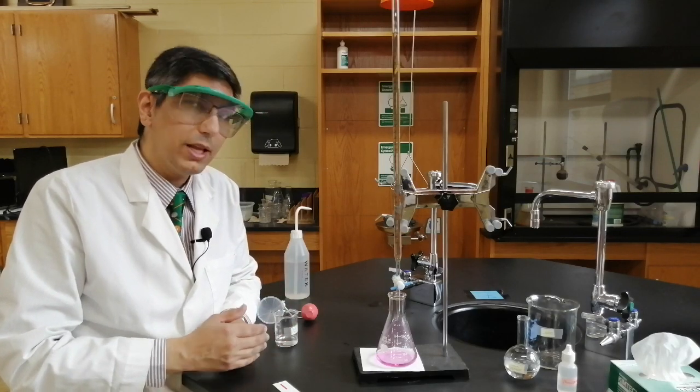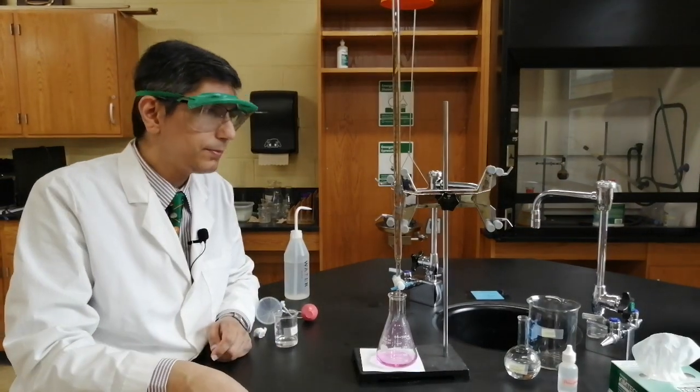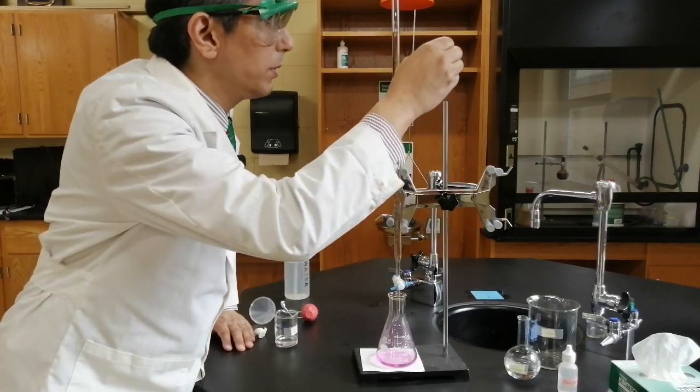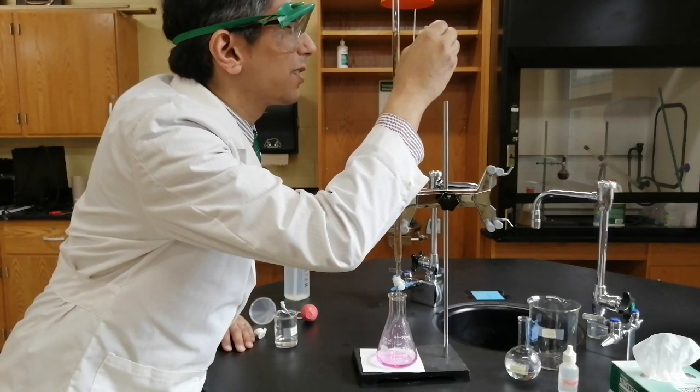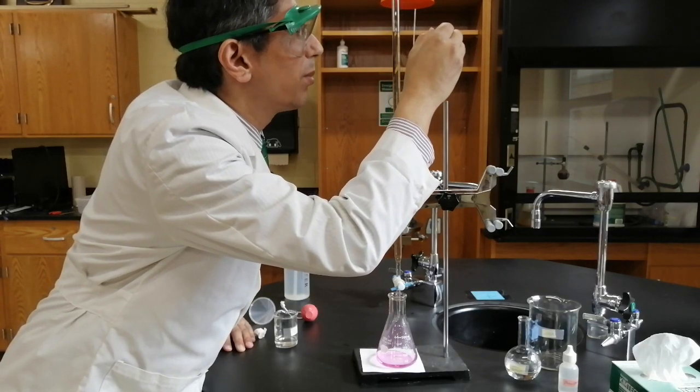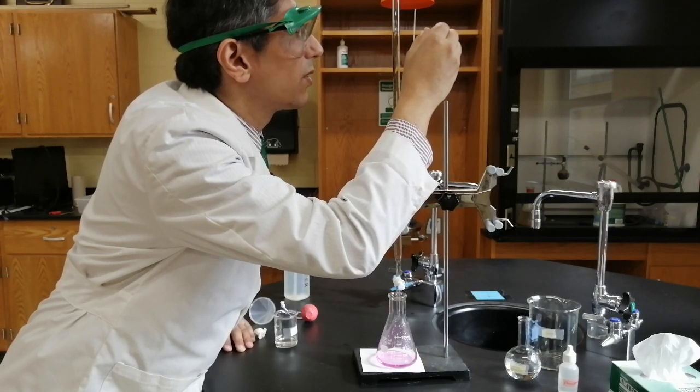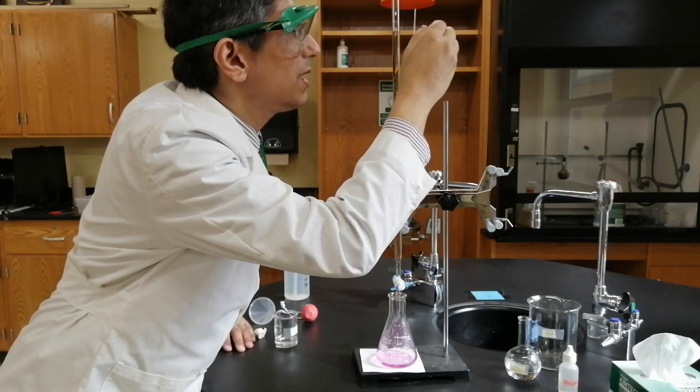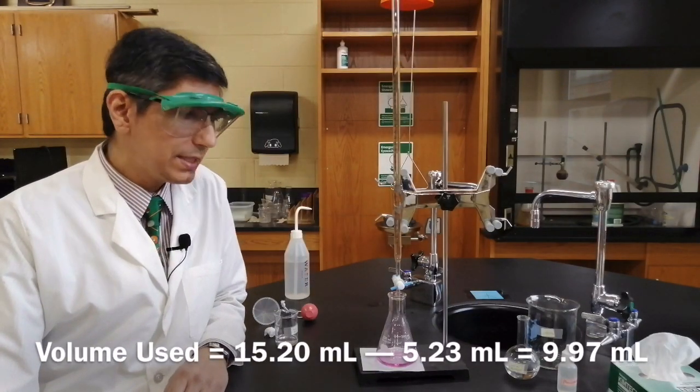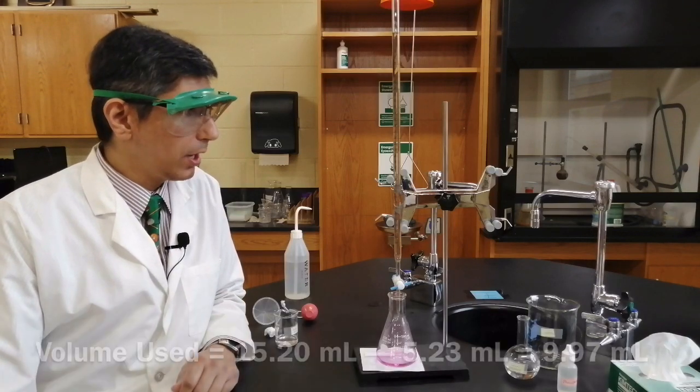So once again, you want to take a final reading. So our initial reading was 5.23. So this is where we can take another reading. And this time it looks like we are right around 15.20. So that means that we used 9.97 milliliters of the sodium hydroxide.